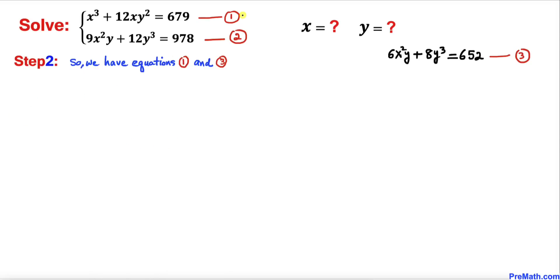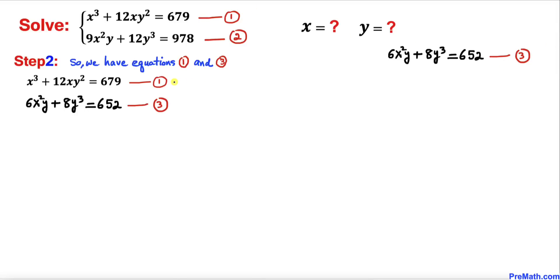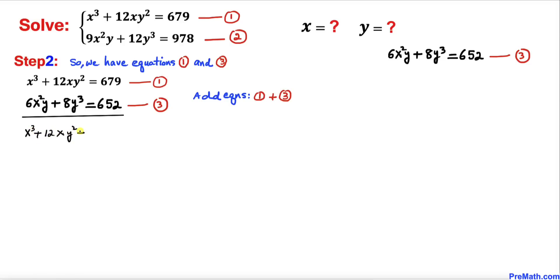Now let's focus on equations 1 and 3. We are going to add these two equations: x³ + 12xy² + 6x²y + 8y³, and when we add the right-hand sides that gives us 1331.